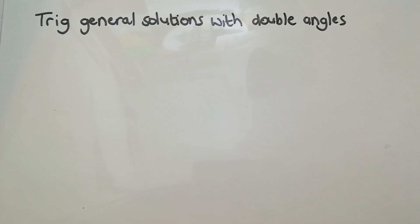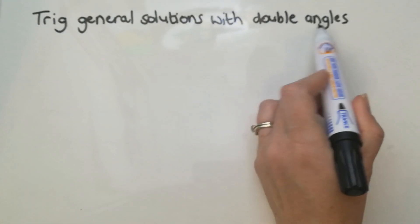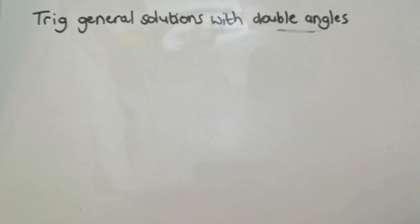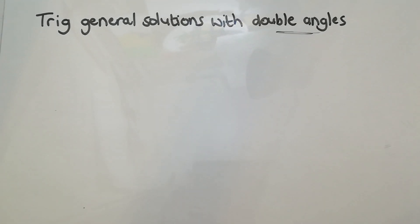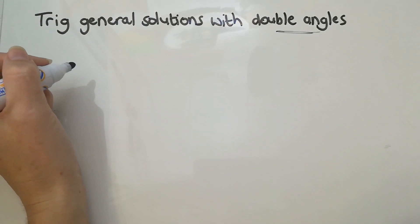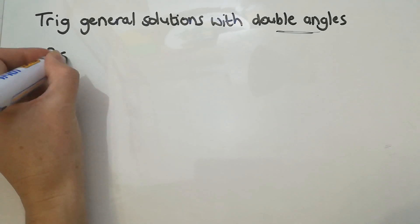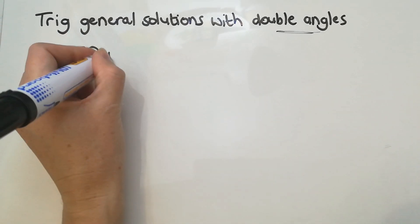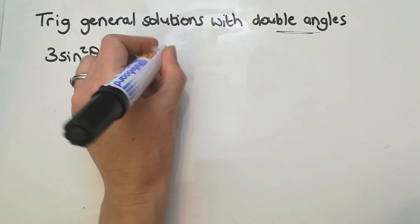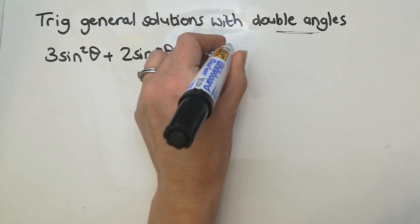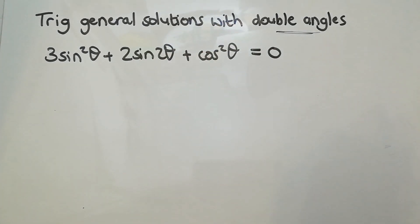The good news about trig equations at grade 12 level is they don't get more complex — we just start sticking double and compound angles into them. All the skills you've learned in grade 11 will be really useful, just applied to double angles. With double angles there's always a question of whether to expand or not, and with lots of practice you'll start seeing when to do that. It really helps to know the double and compound formulas off by heart because then you start recognizing them a lot quicker.